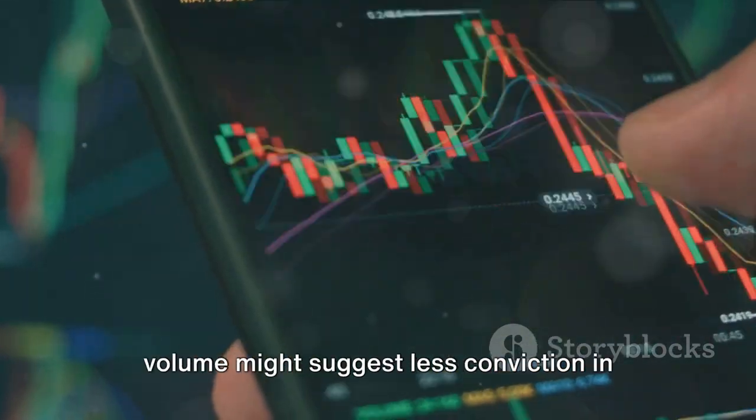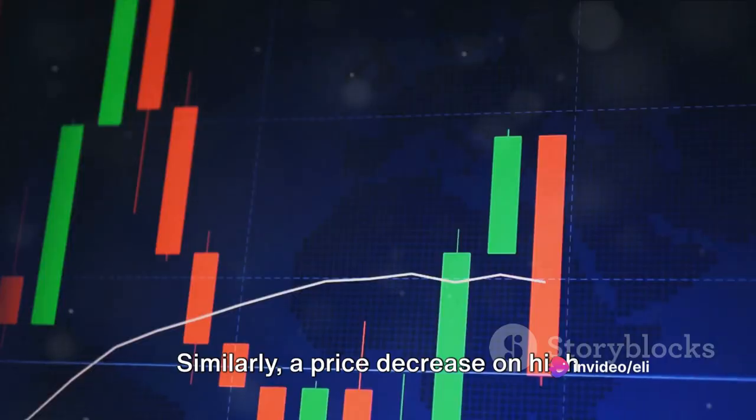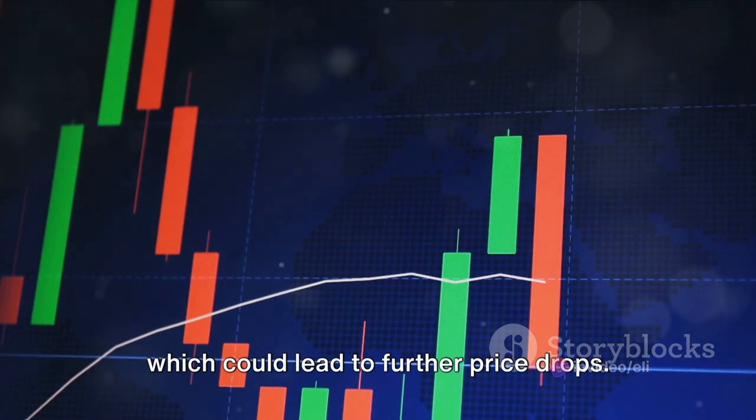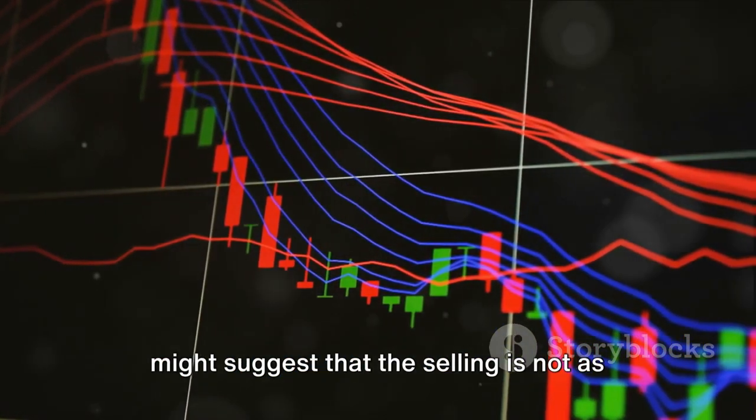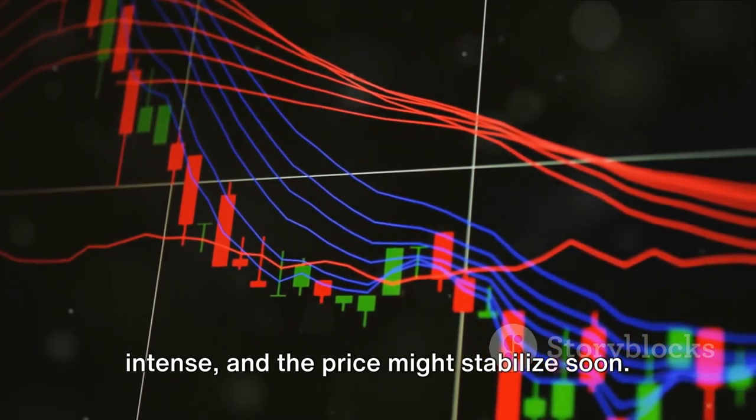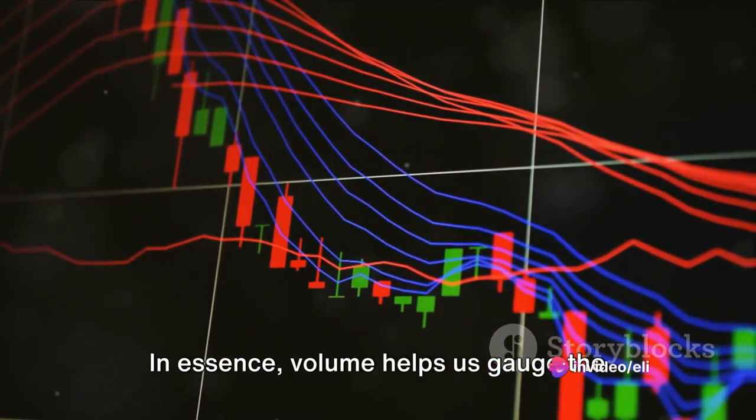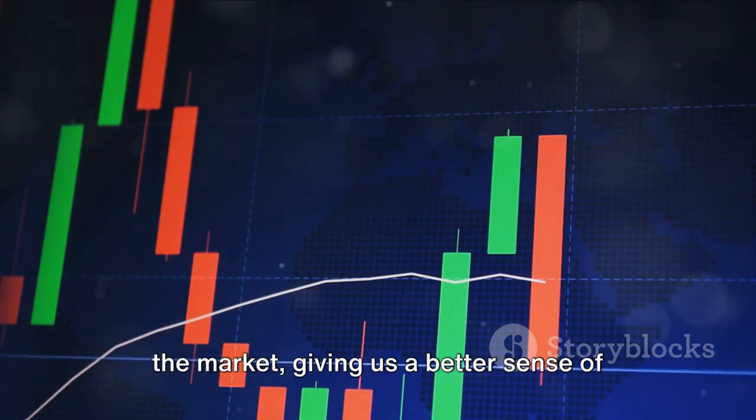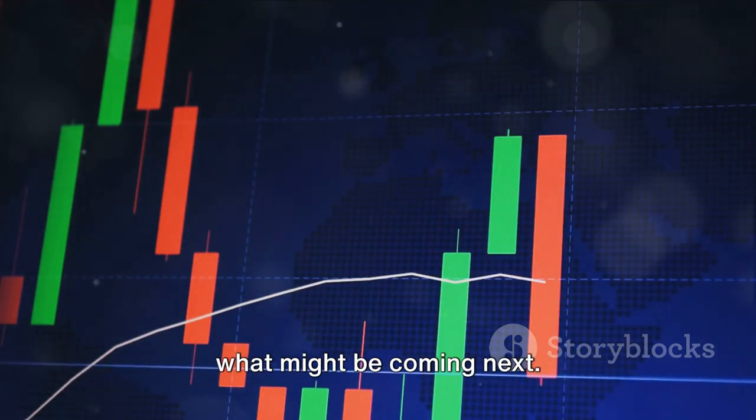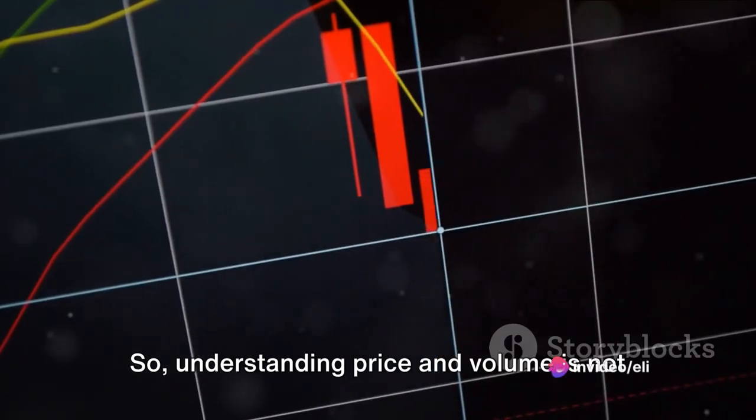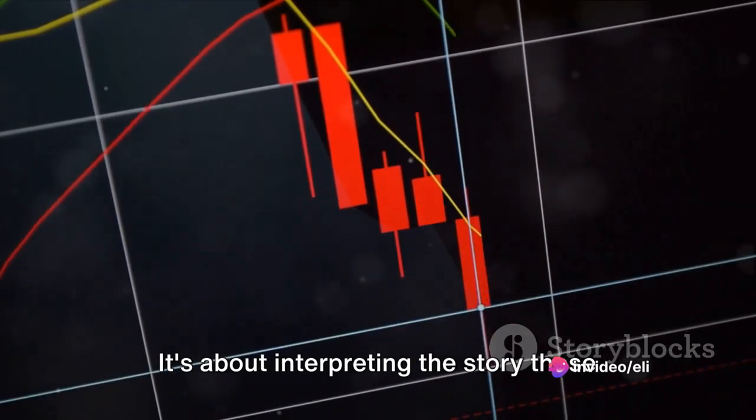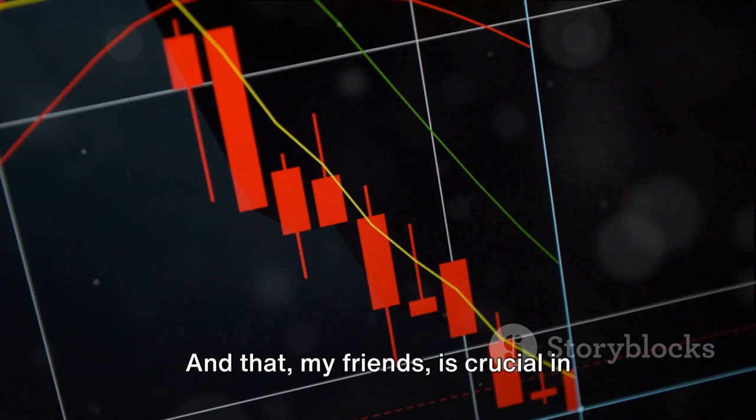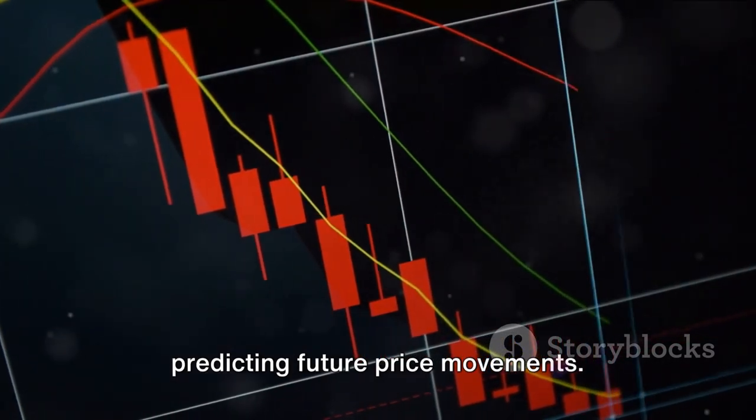Conversely, a price increase on low volume might suggest less conviction in the upward move. Similarly, a price decrease on high volume indicates strong selling pressure which could lead to further price drops. But if the price falls on low volume, it might suggest that the selling is not as intense and the price might stabilize soon. In essence, volume helps us gauge the market sentiment, the collective feeling or mood of investors about a particular stock. It's like listening to the whispers of the market, giving us a better sense of what might be coming next. Understanding price and volume is not just about reading numbers off a chart. It's about interpreting the story those numbers tell about investor sentiment and market trends.